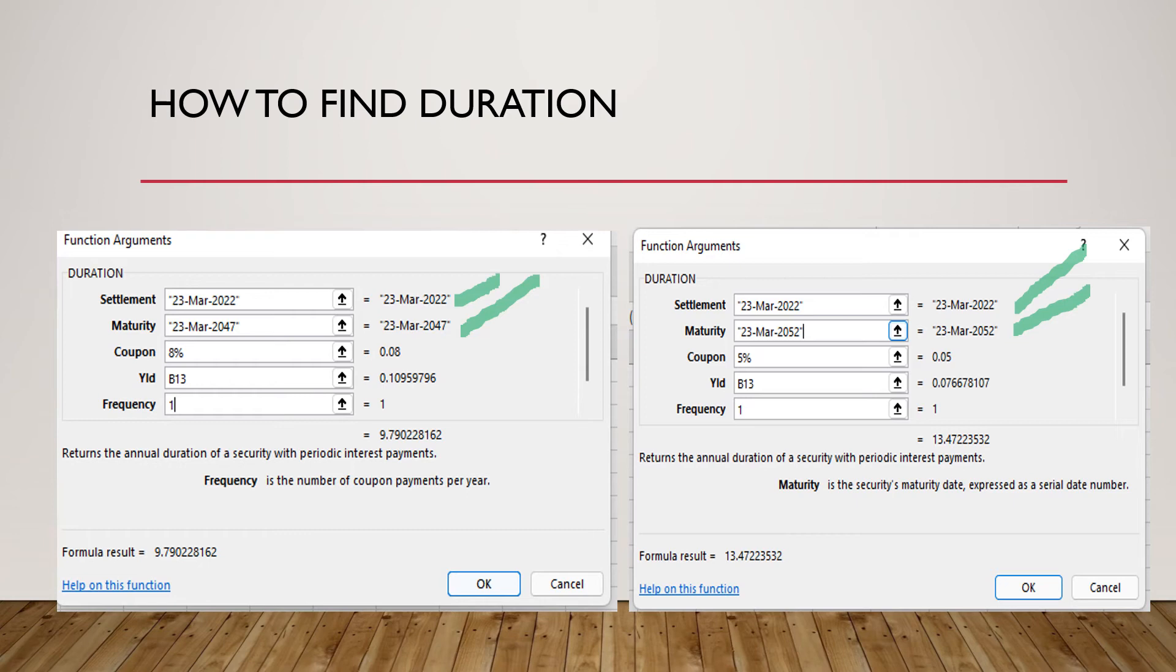Duration is basically the time frame in which the investor will get the money back which has been invested in the bond. So we have got the duration now 9.79 and 13.47. I am only taking values up to two decimal but in Excel automatically the values will be taken for more higher values also.